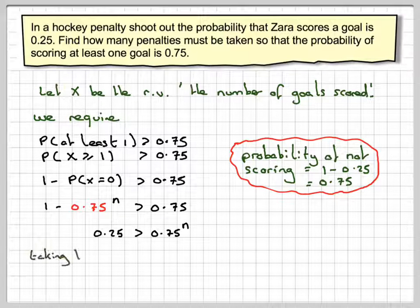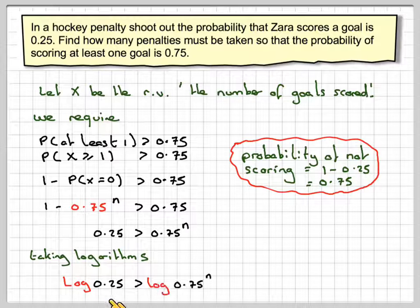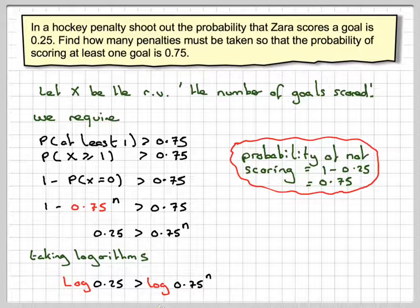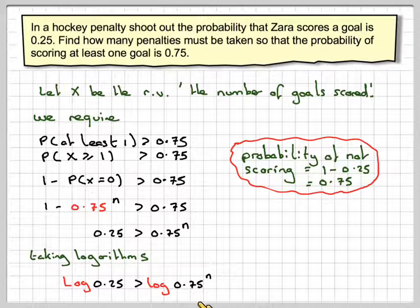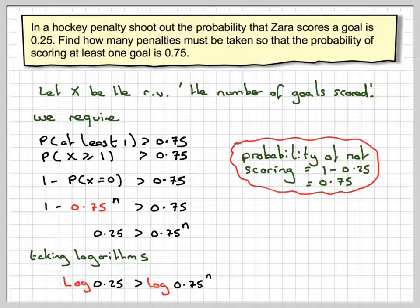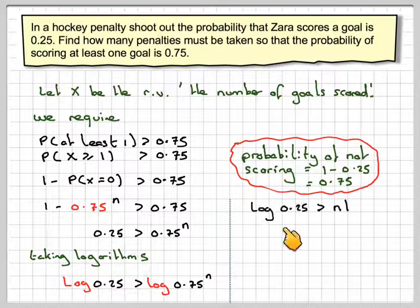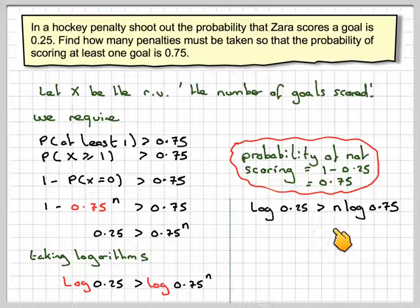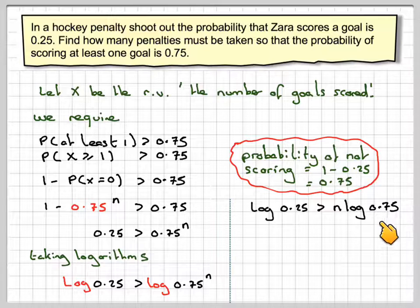To solve this, we need to take logs of both sides. So taking logs of the base 10, we've got log of 0.25 is greater than log of 0.75 to the n. Using the rule of logarithm, we can bring the n down in front. So we've got log of 0.25 is greater than n times the log of 0.75.